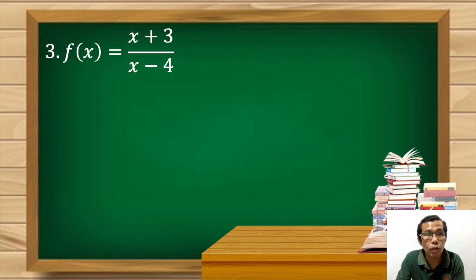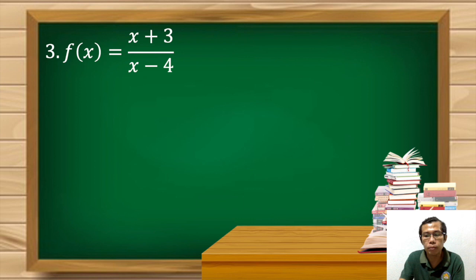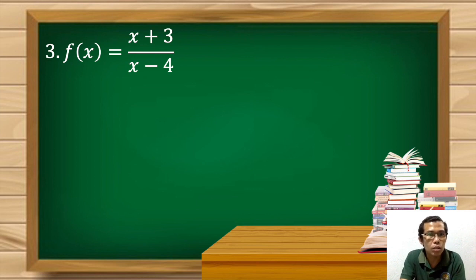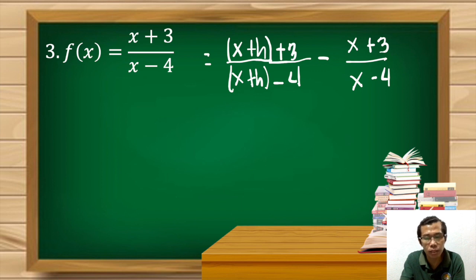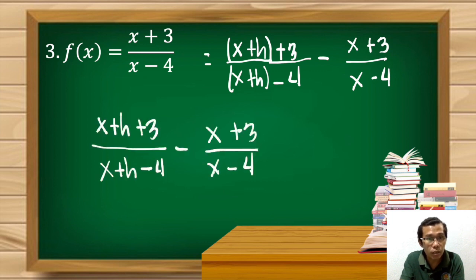Now let's try Example 3 — this time we have a rational function. f(x) = (x+3) / (x−4). Every time we see the variable x we replace it with x+h, so that becomes (x+h+3)/(x+h−4), minus (x+3)/(x−4) which is our f(x), all divided by h. We can simply remove the outer parentheses since it is just addition after them.